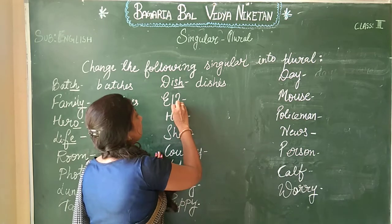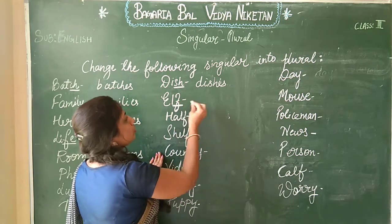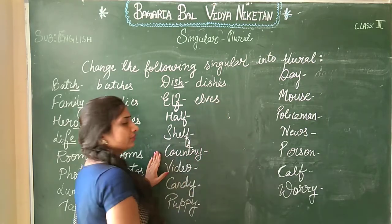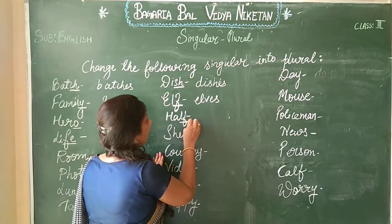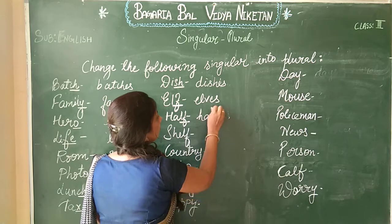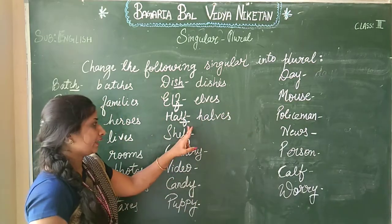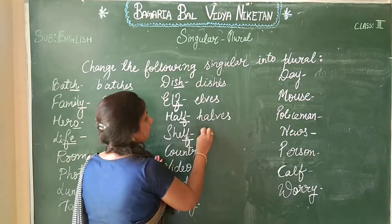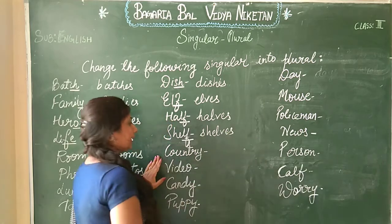Next: 'elf'. Here at the end there is F, so it will be changed into 'elves', E-L-V-E-S. Next: 'half'. We can change 'half' into 'halves' because at the end there is F. Then 'shelf' becomes 'shelves', S-H-E-L-V-E-S.